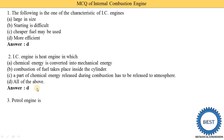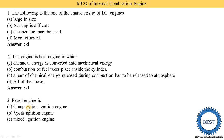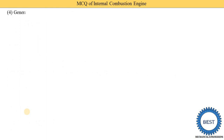Next MCQ: the petrol engine is — option A: compression ignition engine, option B: spark ignition engine, option C: mixed ignition engine, option D: all of the above. The petrol engine is known as the SI (spark ignition) engine because a spark plug provides ignition for the petrol. So option B is the correct answer.